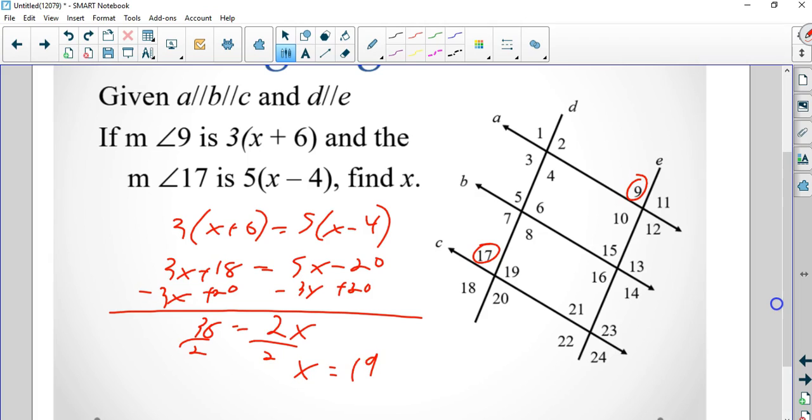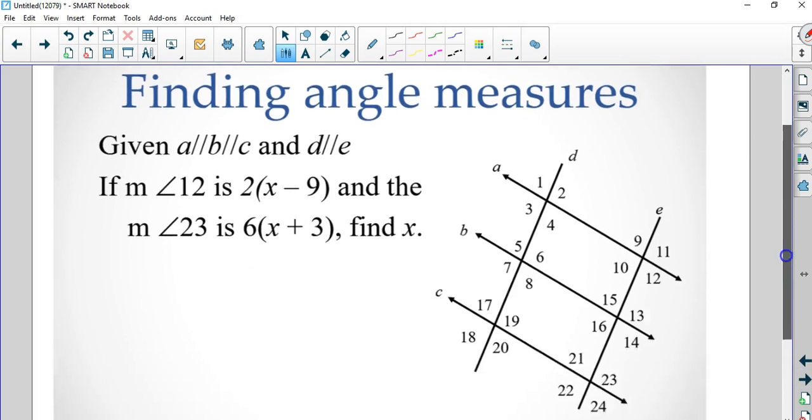Again, positive number. So 19 is the answer for that. If I'm popping that in, 19 plus 6 is 25, 25 times 3 is 75. So this should be 75 degrees. I do the same thing for angle 17. 19 minus 4 is 15, which times 5 is 75.